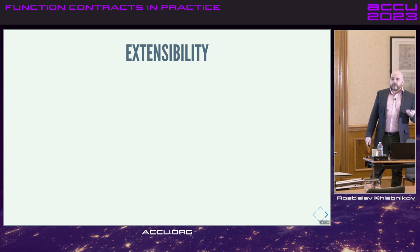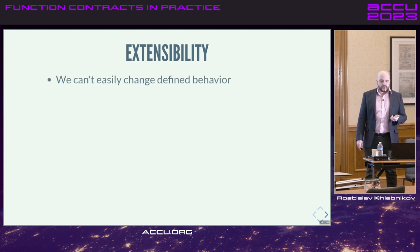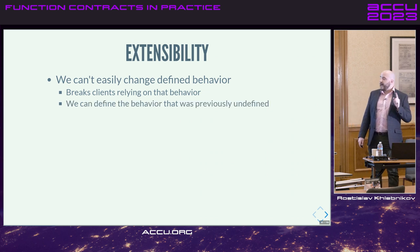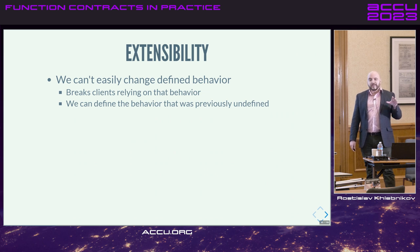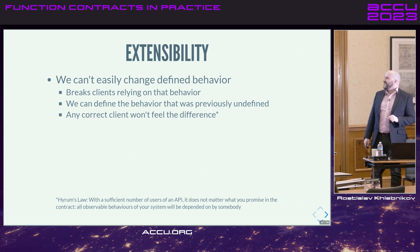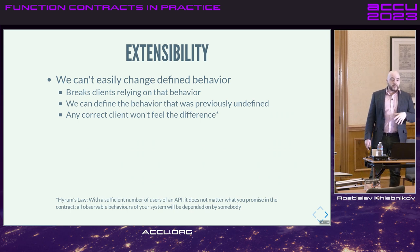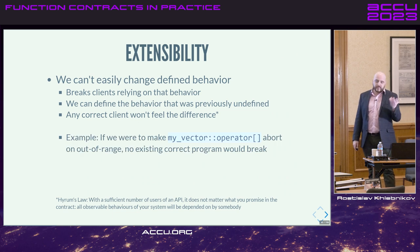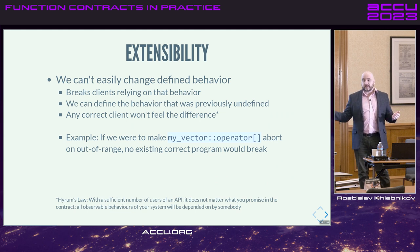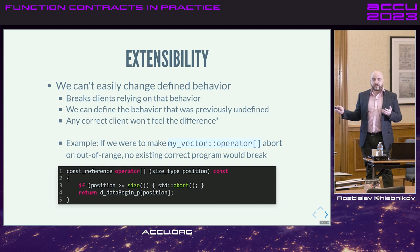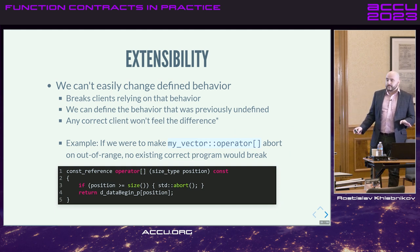Extensibility: if we defined all behavior, we cannot easily change it — it will break every client that relies on that defined behavior. But if the behavior was undefined before, nobody is supposed to rely on it. Any correct client that does not violate our contract and does not invoke undefined behavior — we can change that to something defined without breaking any existing clients. For example, if we have our own vector implementation with the indexing operator having undefined behavior when out of range, we could change that to just abort. No existing correct program would break.